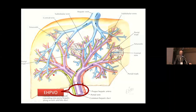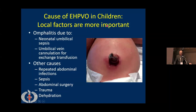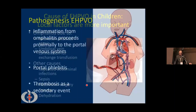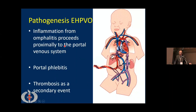EHPVO, or extrahepatic portal vein obstruction, is much more common in children in our part of the continent. One of the most important causes is omphalitis or neonatal umbilical sepsis; other causes include repeated abdominal infections, sepsis, abdominal surgery, trauma, and dehydration. In pathogenesis, inflammation from omphalitis proceeds proximally through the umbilical vein into the portal vein system, leading to portal phlebitis — thrombosis is the secondary event.